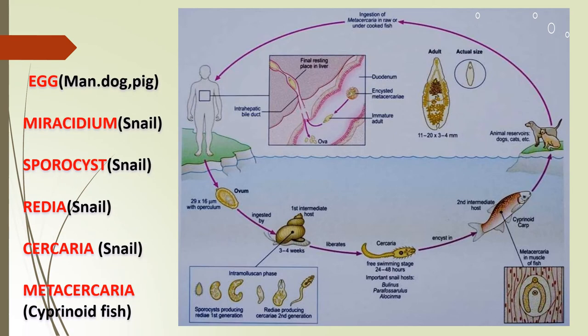Another diagram shows a mature worm residing in the bile duct of man. Animal reservoirs can be dogs, cats and pigs. Operculated eggs are released and ingested by the snail — the first intermediate host — where miracidium, sporocyst, redia and cercaria are formed. Cercaria swims and is taken up by fish; in the fish muscles it attaches and forms a cyst wall, changing into metacercaria. It is then again taken up by animal reservoirs or by man.